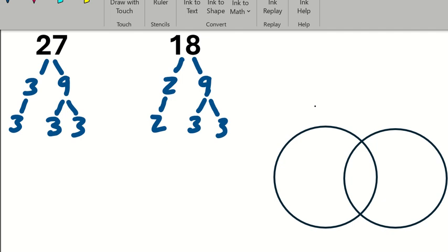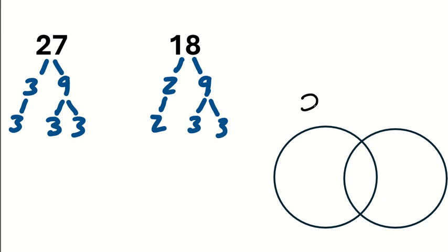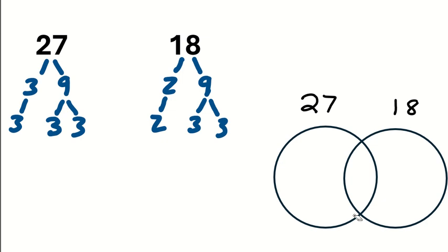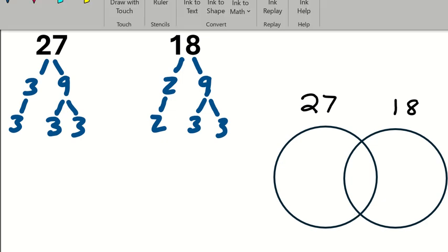Now let's go over to this Venn diagram. Let's have this left circle represent 27 and let's have this right circle represent 18. And then of course the middle represents the numbers they have in common. Having said that, let's go ahead and organize the prime factors.